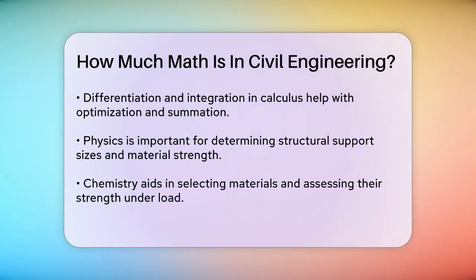Physics and chemistry also play significant roles in civil engineering. Physics is used to determine the size of supporting piers for bridges, the thickness of steel columns, and the number of columns needed. Chemistry is used to measure the strength of materials, helping engineers select the right materials for a project and determine how much stress a beam can handle.